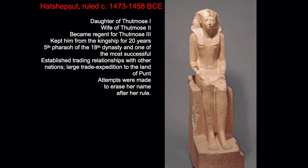We're going to start with Hatshepsut, and she had a power struggle with her stepson. She was the daughter of Thutmose I, the wife of Thutmose II — one of the wives. She became regent for her stepson, Thutmose III, who was born of another wife, and she basically kept him from being king for 20 years. She was the fifth pharaoh of the 18th dynasty and one of the most successful because she established trading relationships with other nations. She did engage in military expeditions, but the core of her success was trade.